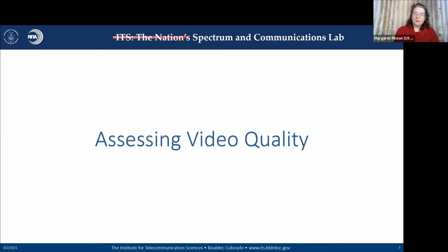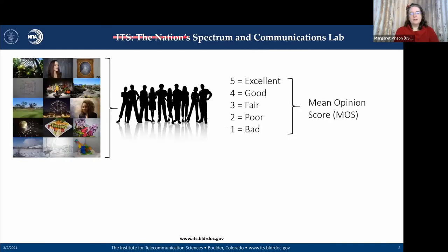The gold standard for assessing video quality is a video quality subjective test. You very carefully gather images or videos to explore the question of interest — for instance, to pick the proper bit rate for a satellite system as a compromise between quality and the number of channels that fit. You randomize those short videos or images, show them to a panel of people who rate them on a simple scale. The most popular today is excellent, good, fair, poor, bad. You take those assigned numbers, average them, and call that a mean opinion score. This is very slow, time-consuming, expensive, and not practical for in-service problems.